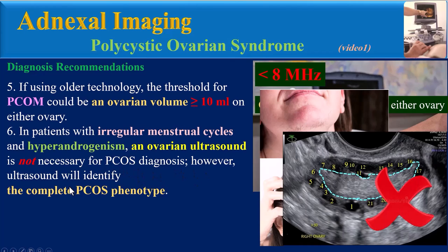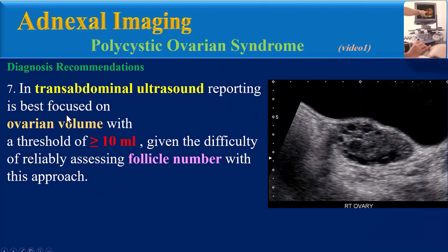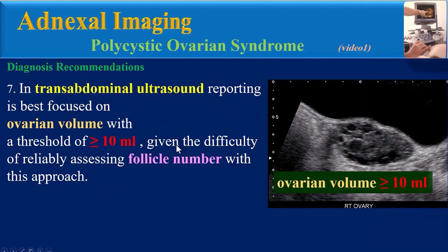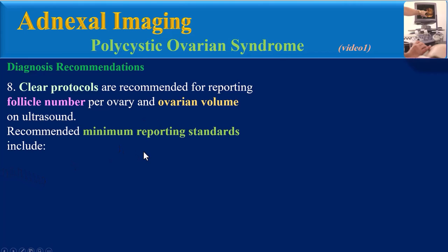In patients with irregular menstrual cycles and hyperandrogenism, an ovarian ultrasound is not necessary for PCOS diagnosis, though ultrasound will identify the complete PCOS phenotype. For transabdominal ultrasound, reporting is best focused on ovarian volume with a threshold of 10 milliliters or more, given the difficulty of reliably assessing follicle number with this approach.